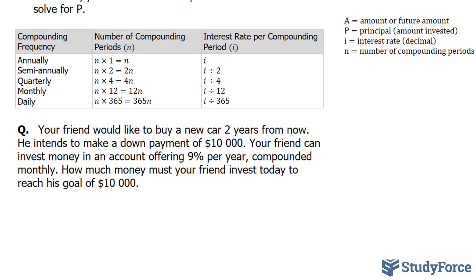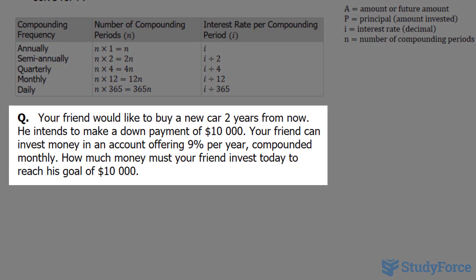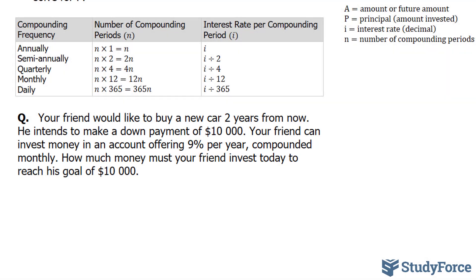The question asks us, your friend would like to buy a new car 2 years from now. He intends to make a down payment of $10,000. Your friend can invest money in an account offering 9% per year, compounded monthly. How much money must your friend invest today to be able to reach his goal of $10,000? Let's write down everything we know so far.